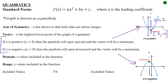Next we're calculating domain and range. Domain is the list of all x-values included in the function — how far left and right the graph goes. Range is which y-values are included — how far up and down the graph goes. To include values we use brackets or ≤/≥ symbols; to exclude values we use parentheses or strict < / > symbols.